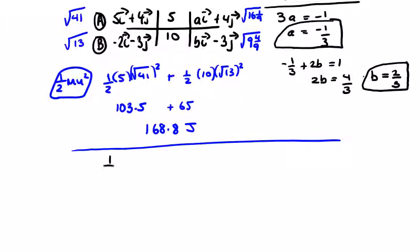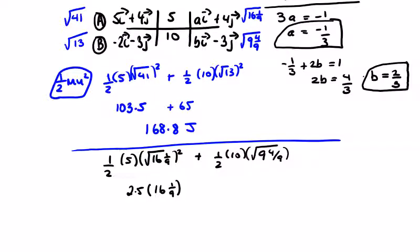Final kinetic energy: (1/2)(5)(16 and 1/9) = 2.5 × (145/9), plus (1/2)(10)(9 and 4/9) = 5 × (85/9). These sum to 87.5 joules. The loss is 168.5 minus 87.5 equals 80 joules.